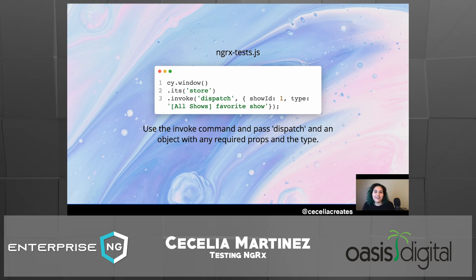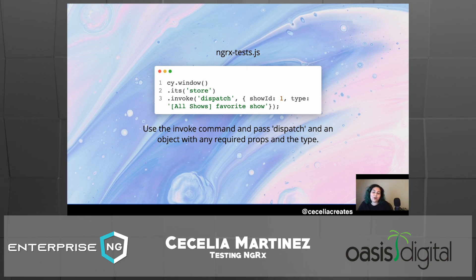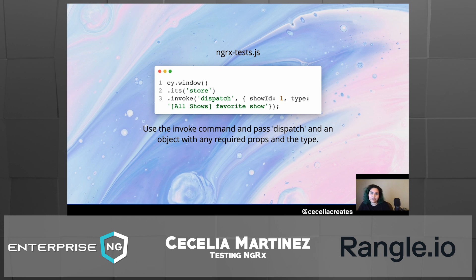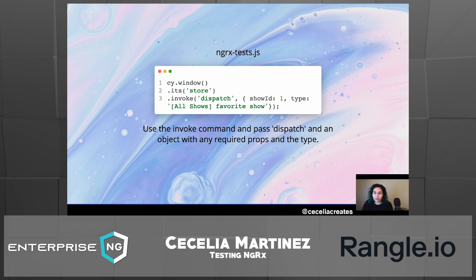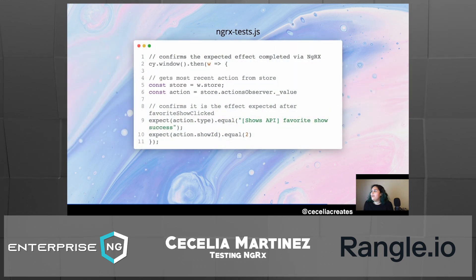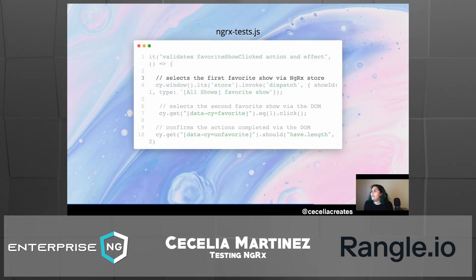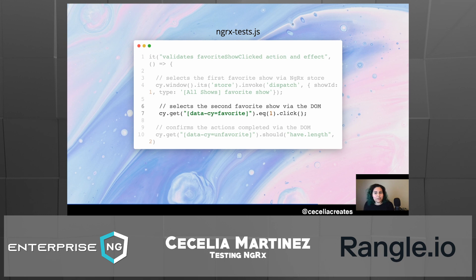In this case, we're dispatching the 'all shows favorite show' type, which is the action type, and passing through the show ID as a required prop for that action. In your test code, you dispatch this action to set up your test in preparation for assertion. We used this to select the first favorite show via NGRX — dispatching the action to favorite the show in the window — then did the second one using a regular click, and then confirmed and validated it with our store.